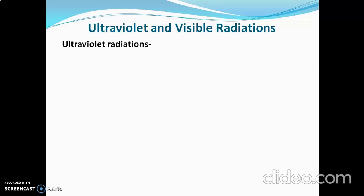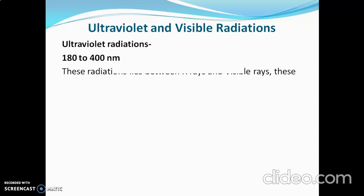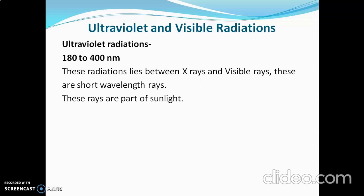Ultraviolet radiations have a range of 180 to 400 nanometers. These radiations lie between X-rays and visible rays on the electromagnetic spectrum. They have shorter wavelength than visible rays, which means they have more energy than visible rays.